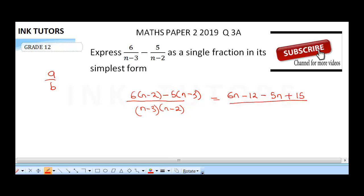We'll leave the denominator unexpanded. So 6n minus 5n gives us n. Then minus 12 plus 15 gives us positive 3.